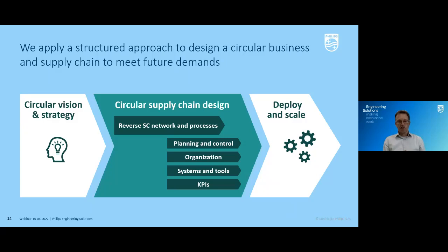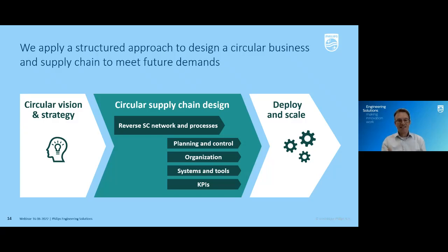Circular supply chain design, in the basics, is similar to regular supply chain design. We start from the vision and strategy, then design the supply chain elements: set up a supply chain network and processes, embed planning and control, organize, ensure we have the systems and tools in place, and the KPIs to monitor progress and success. Once we've created the architecture — how this circular supply chain should look — we can move forward to deployment and scaling.